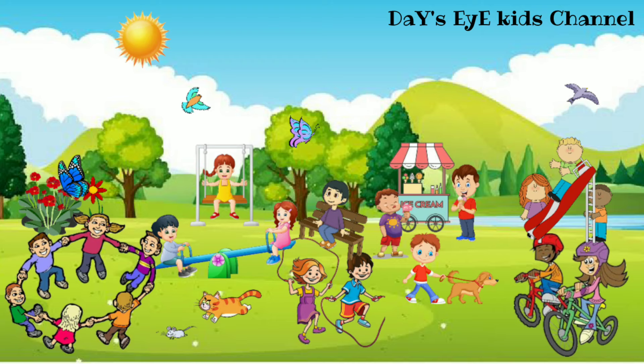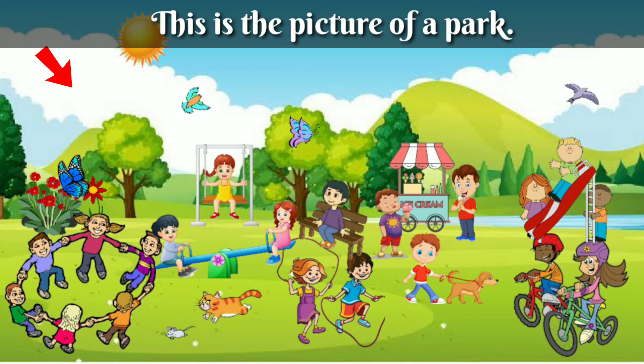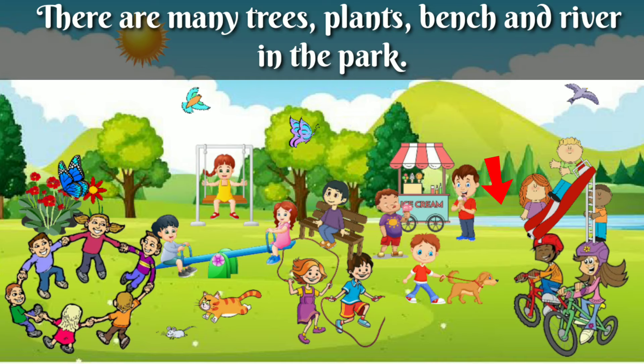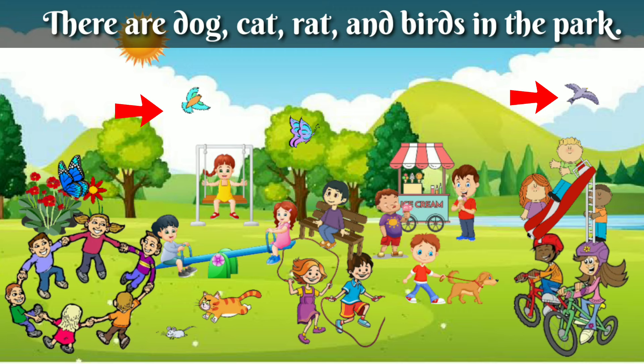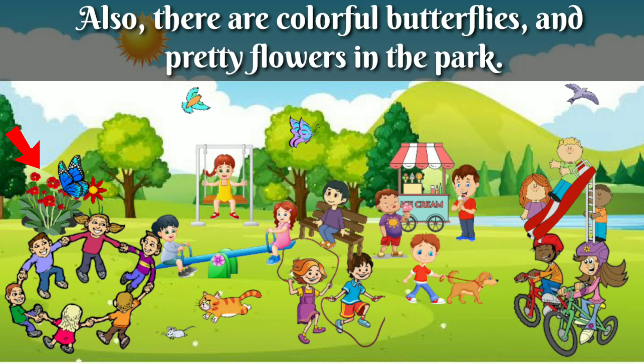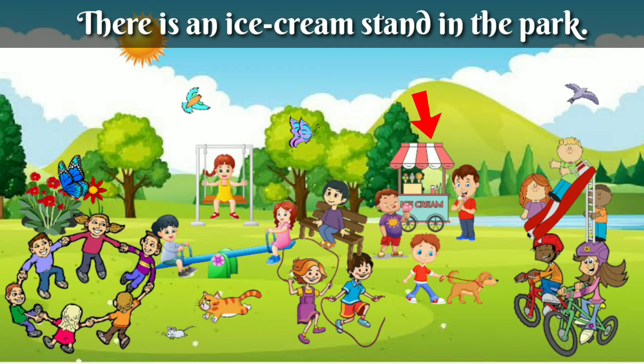Let's start. This is the picture of a park. There are many trees, plants, a bench, and a river in the park. There are dogs, cats, rats, and bats in the park. Also there are colorful butterflies and pretty flowers in the park. There are so many rides in the park, and there is an ice cream stand.